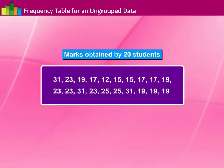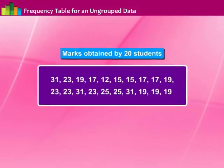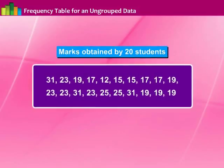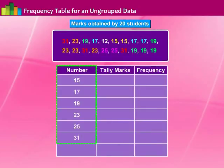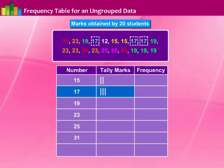Let us learn how to make a frequency table for ungrouped data. Given are the marks obtained by 20 students in mathematics. From the data we can see that 15, 17, 19, 23, 25, and 31 are repeated. Let us arrange these numbers each a single time under the number column, one below the other. Now read the number and put the tally mark in the tally mark column against the number. In the same way, put the tally mark till the last number.